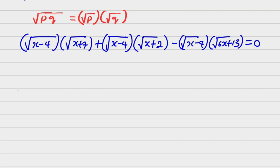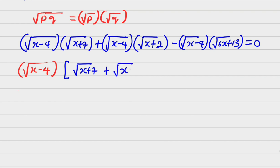Now, root of x minus 4 is common to everything, so I'm going to factorize it out — bringing out root of (x minus 4) — giving a big bracket containing: root of (x plus 7) plus root of (x plus 2) minus root of (6x plus 13).